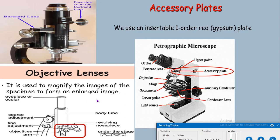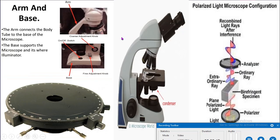The arm and base are the frame of the microscope and function as support in a vertical tube microscope. The arm is normally connected to the base by an inclination joint that allows both the tube and stage to be inclined. In an inclined tube microscope, there is no inclination joint and the arm and base are built as a single frame.